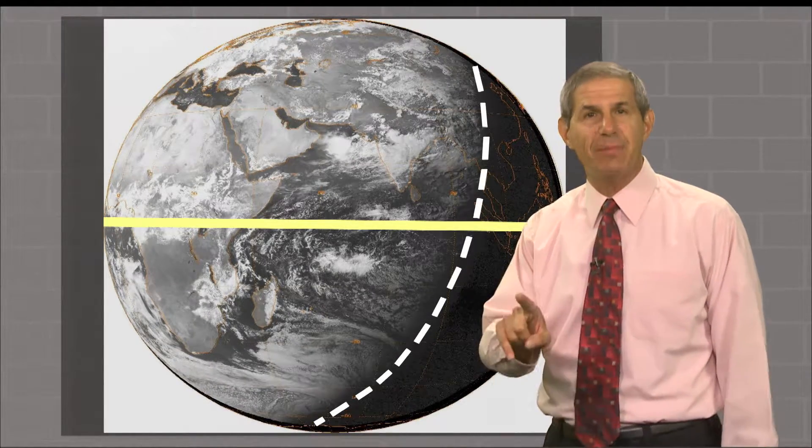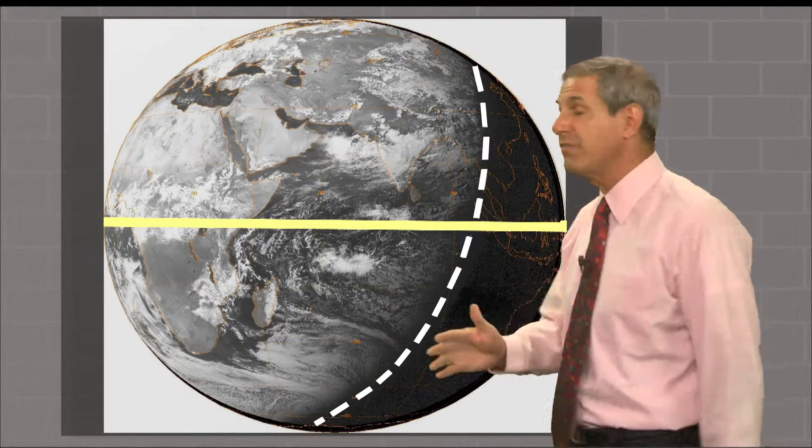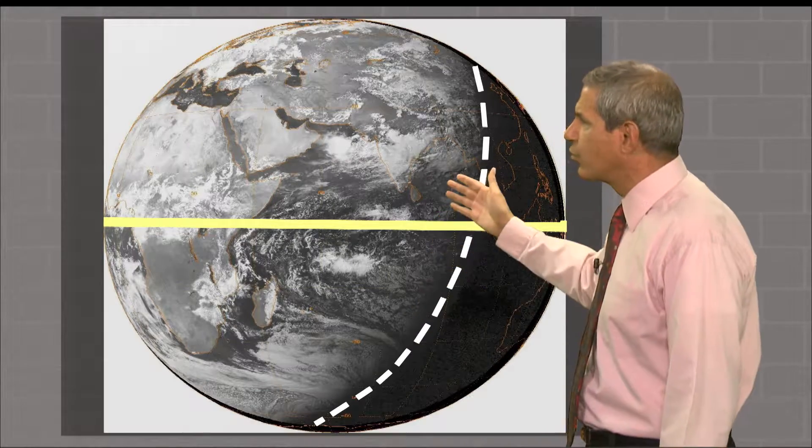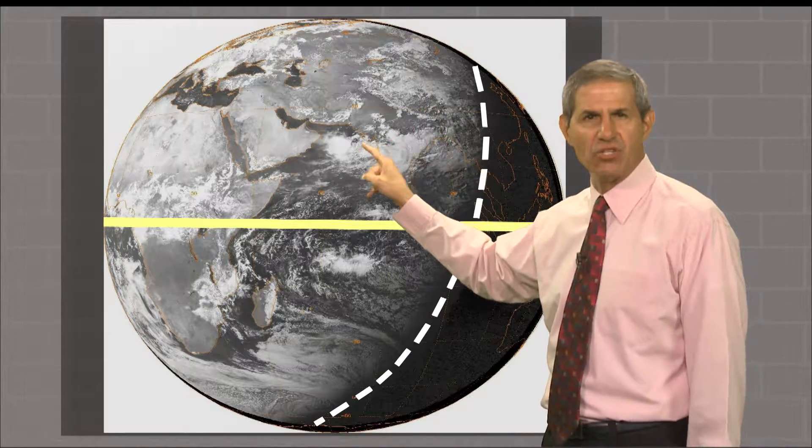Here's that same view at the same time of day, but on the first day of northern hemisphere summer. Here, the shape of the terminator clearly allows the northern hemisphere to get more sunshine.